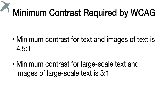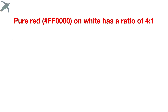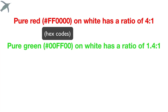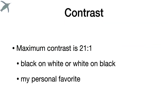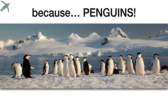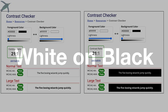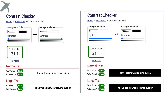Contrast ratio has to do with perceived luminance or brightness between two colors, expressed as a ratio. The low end is 1 to 1 — white on white, which you cannot read. The maximum is 21 to 1. It goes down a little bit if you're going to use larger fonts. Pure red on white has a ratio of 4 to 1, pure green on white has a ratio of 1.4 to 1, and pure blue on white has a ratio of 8.6 to 1. Black on white or white on black is the easiest to read — it doesn't matter which one you pick as the foreground or background, it's a contrast ratio.